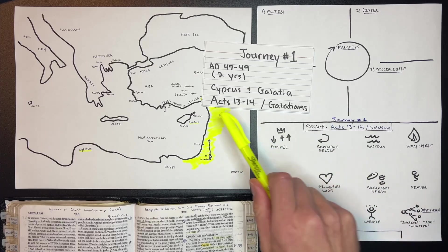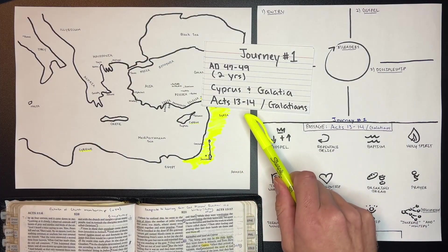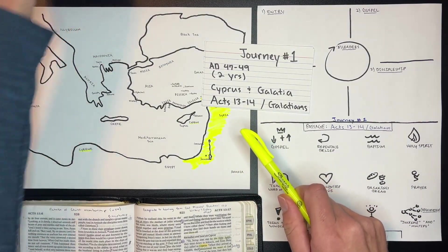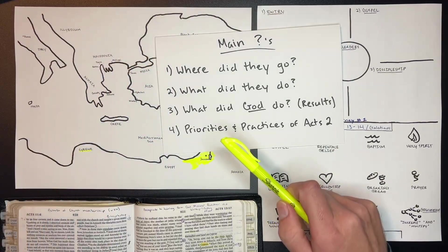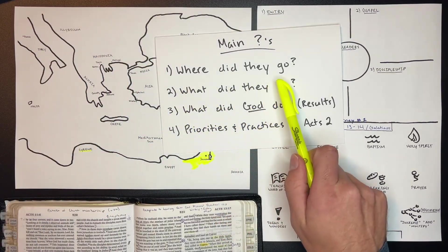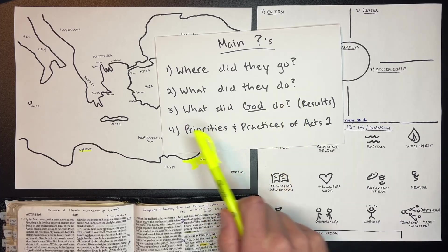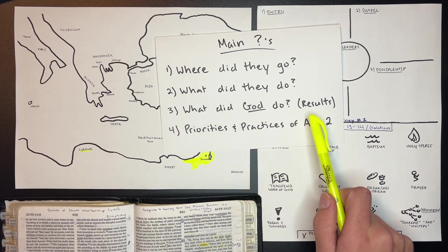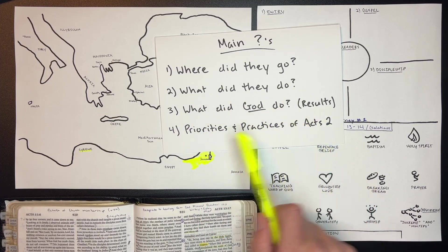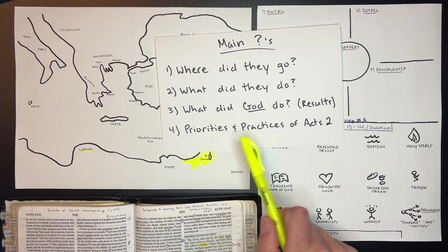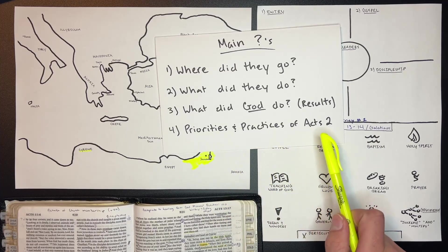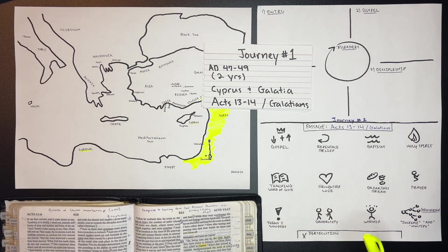In this video, we're going to study Acts 13 and 14, and we're going to ask four primary questions: Where did they go? What did they do? What did God do, or what were the results? And do we see any of the priorities and practices of Acts 2, the first church?